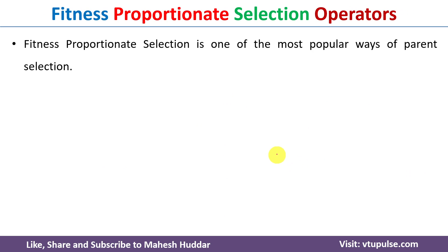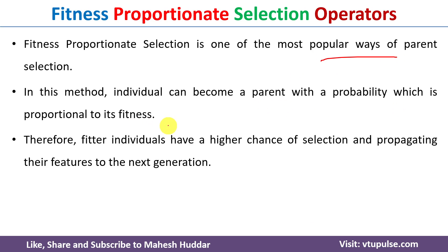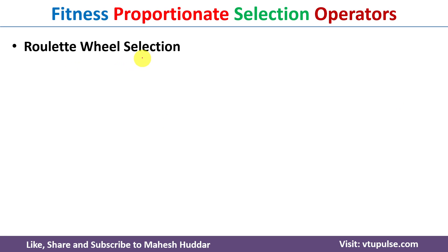We will start with fitness-based selection techniques. Fitness-based selection is one of the most popular ways of parent selection in genetic algorithm. In this method, an individual can become a parent with a probability proportionate to its fitness. The fitter the individual, the higher the chance of getting selected and propagating their features to the next generation.